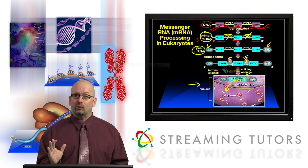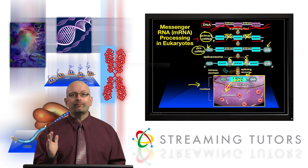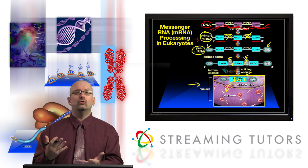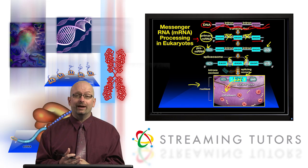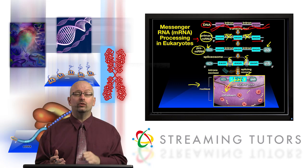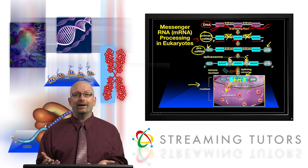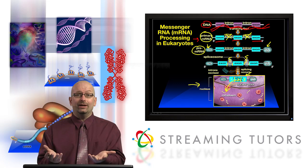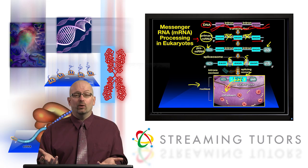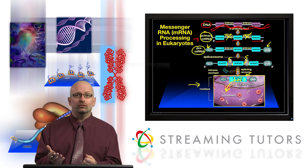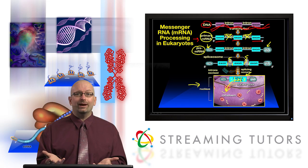In bacteria, there is no nucleus anyway, so there's no need for processing. Bacteria do not have introns, so the messenger RNA that's made — what we'd consider the primary mRNA — is ready to go get translated. This was very shocking when it was discovered that there are all these interruptions in sequences in most of our genes that don't even get expressed.